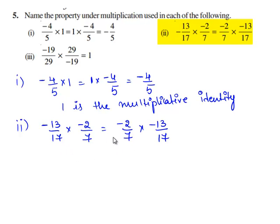Two rational numbers can be multiplied in any order. So the property used here is the commutative property.